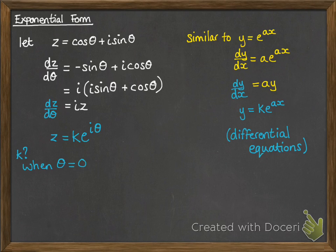So we just need to work out what k is. So consider when theta equals 0, z would be cos 0 plus i sine 0, and that's just 1. So k e to the i 0 would be equal to 1. Now, e to the i 0, that's just going to be 1. Anything to the power of 0 is 1, so that gives us that k equals 1.